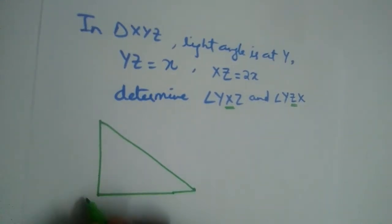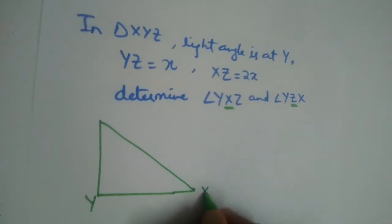We have a right angle triangle. Right angle is at Y. Okay, we can write X here and Z here, or Z here, X here. It is up to us.